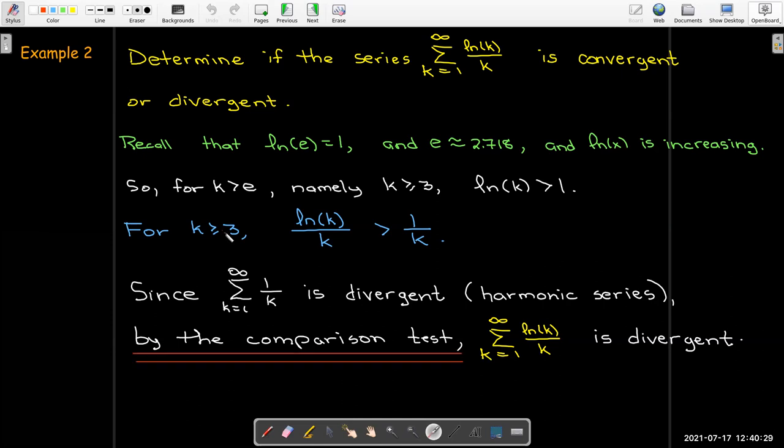the sum from k equals 1 to infinity of natural log of k over k must also be divergent. And again, I'm giving my reasoning here. I've shown all my work. I have stated that the smaller series, so the series with the smaller terms is divergent. And I'm going to use the comparison test.